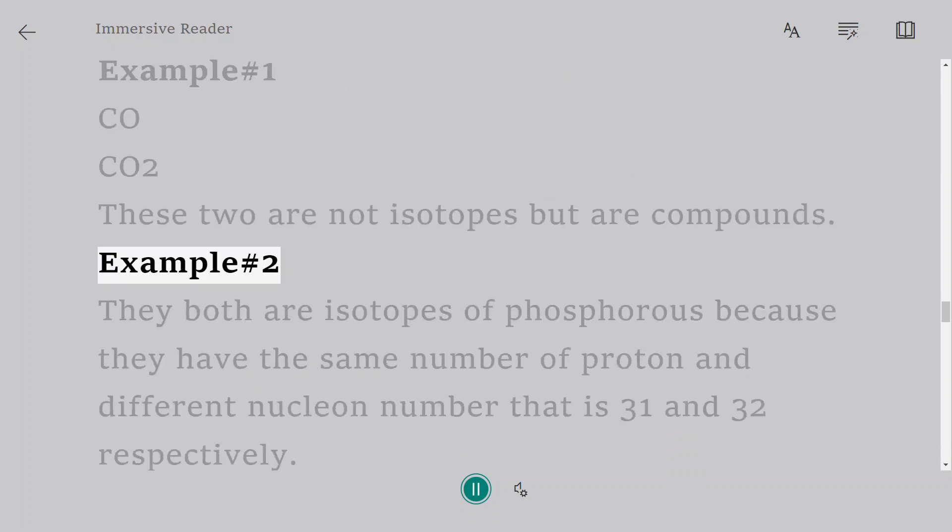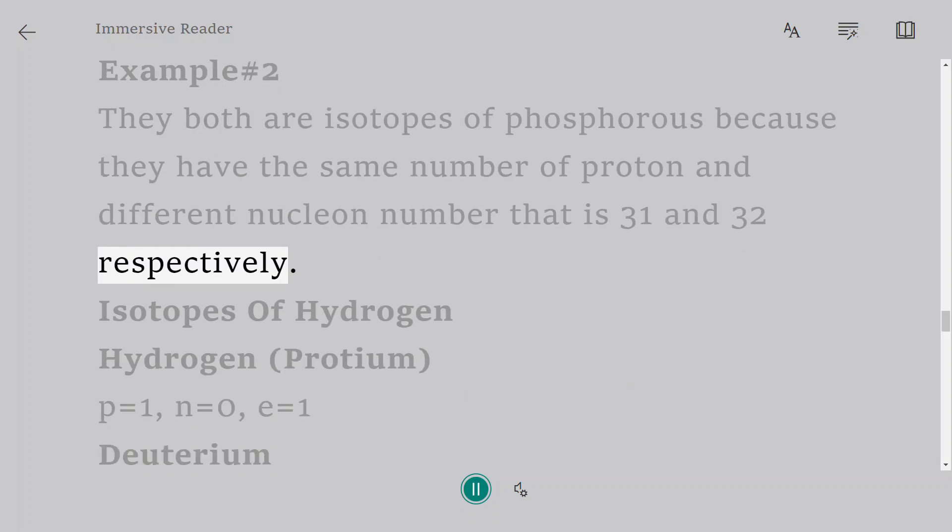Example number 2: They both are isotopes of phosphorus because they have the same number of protons and different nucleon numbers, that is 31 and 32 respectively.